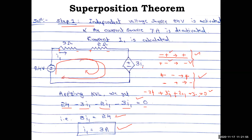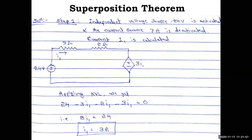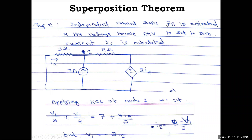For step two, find i2 by activating the 7 amp current source and setting the 24 volt source to zero. After applying superposition to separate sources, you can then use any technique: voltage divider rule, current divider rule, series-parallel combination, mesh analysis, or node analysis. Since there is a current source present, it is better to use node analysis to avoid writing two equations.